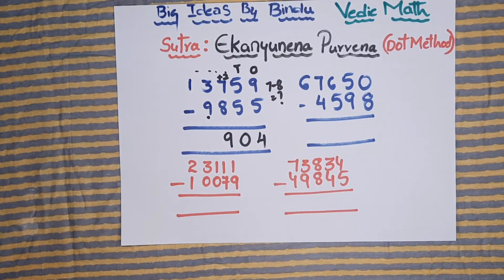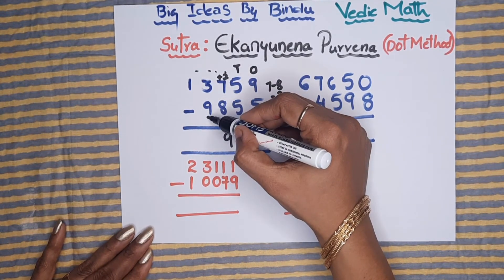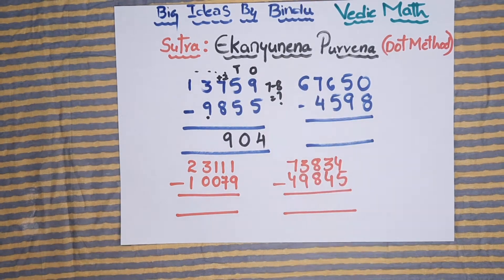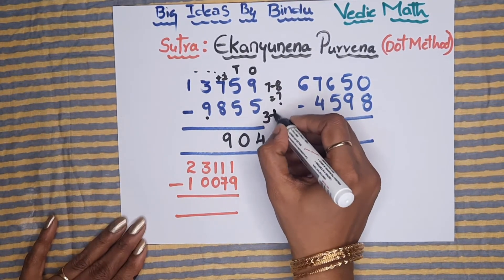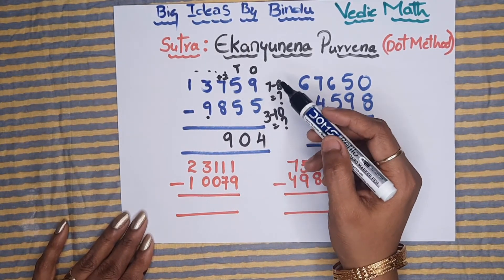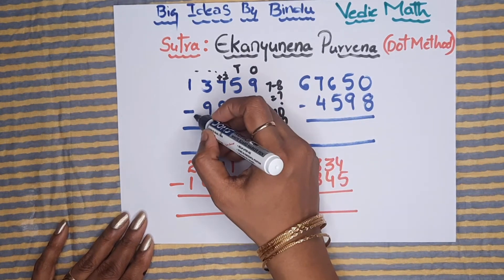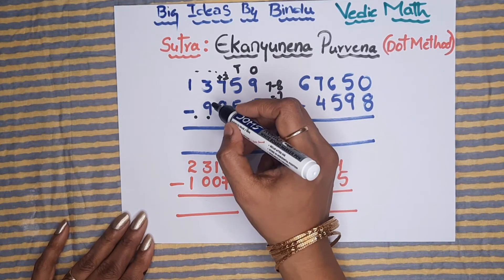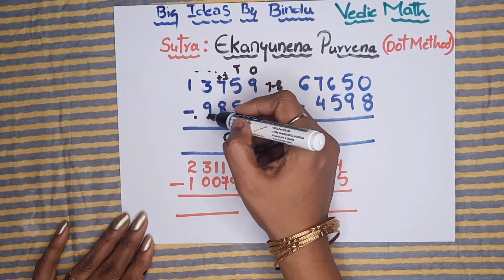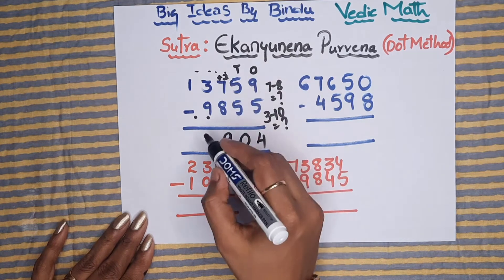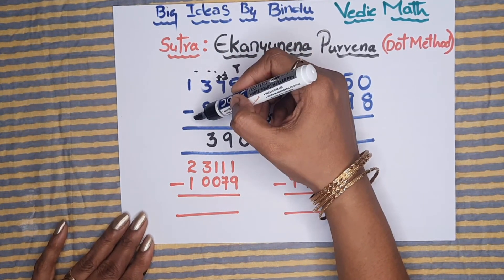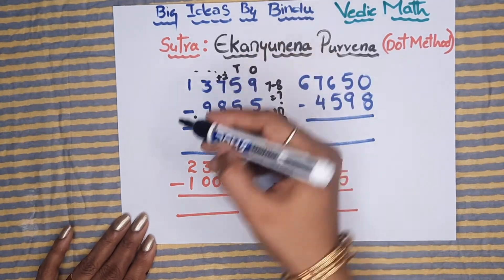Now we have 3 minus 9-with-dot. The dot counts as 1, so 9 and 1 dot means 10 — making it 3 minus 10, which is not possible. So we keep a dot on the left-side digit again. Since the subtrahend digit here is 0, there is no friend to add, so we directly write 3. Then 1 minus the dot (1 minus 1) equals 0.